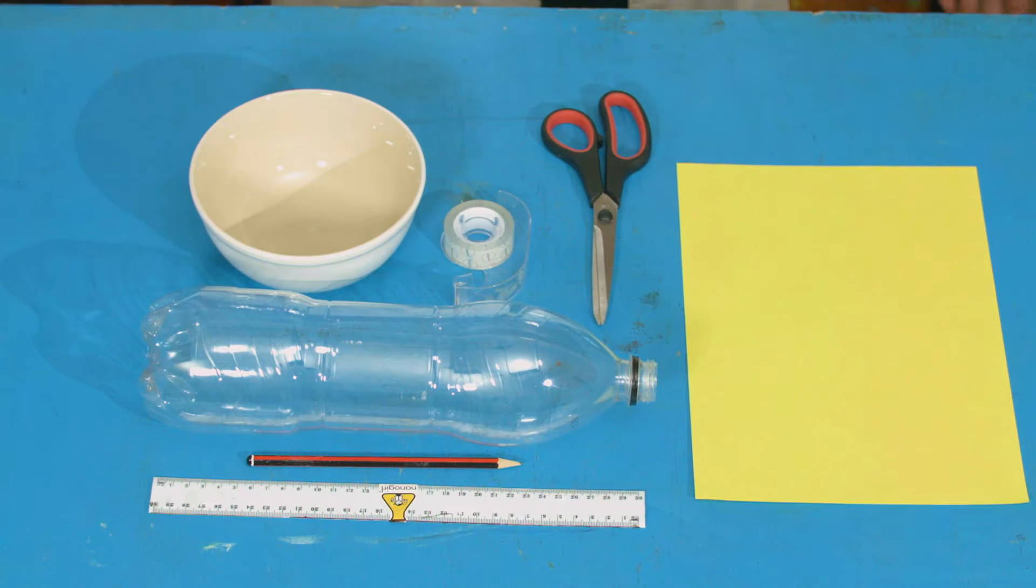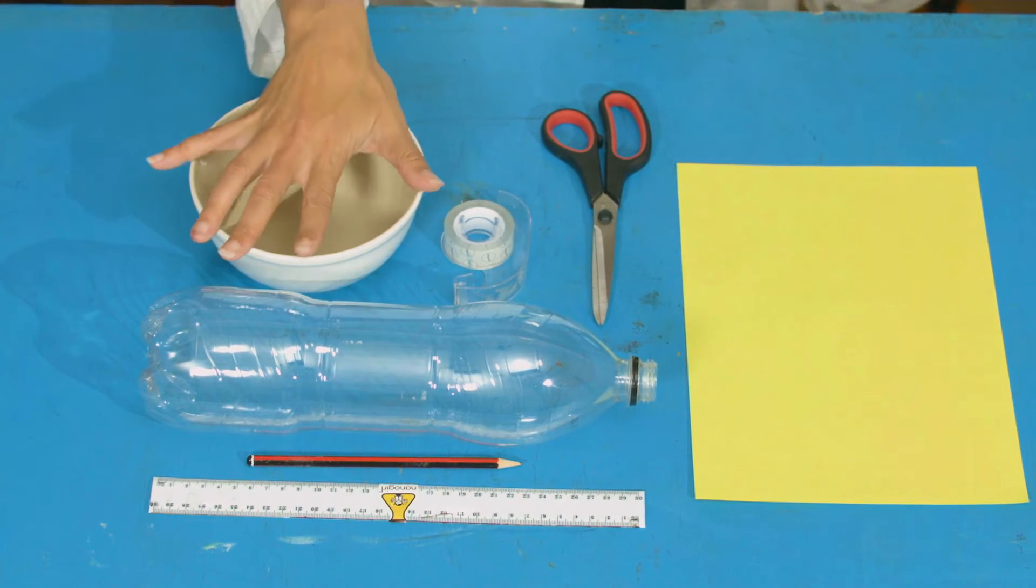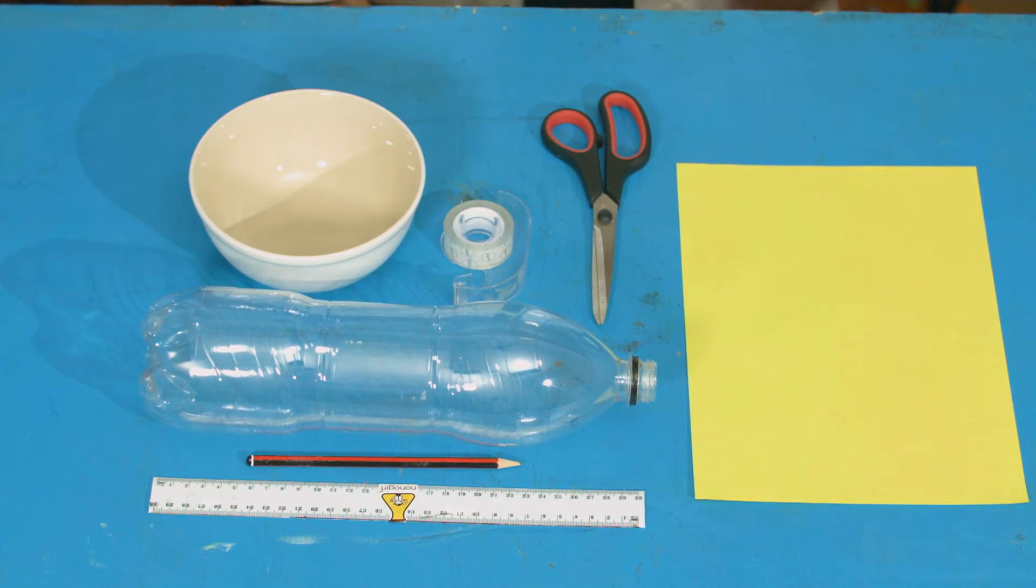You will need an empty plastic bottle like a large soda bottle or an empty milk bottle, something round to draw around like a small bowl, a piece of paper, scissors, a pencil, a ruler, and some sticky tape.